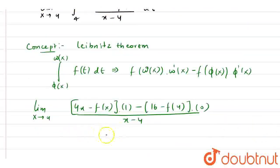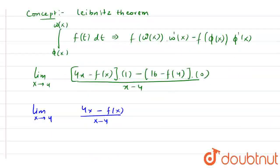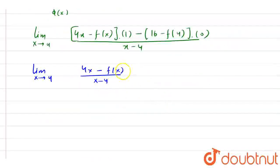Finally, we have limit x tends to 4 of (4x minus f(x)) divided by (x minus 4). Now if you put the value here, you will get 16 minus f(4) divided by 0. To avoid that 0,